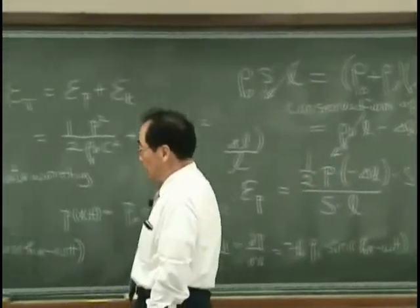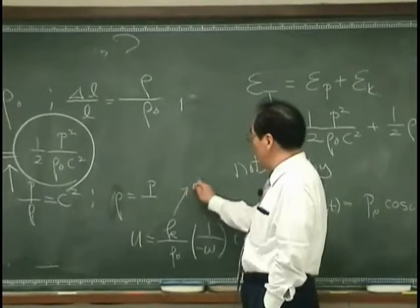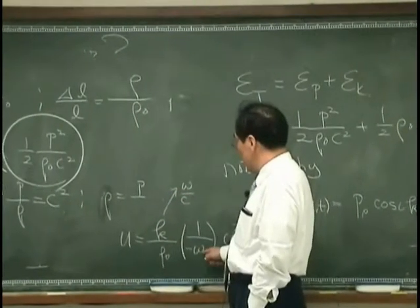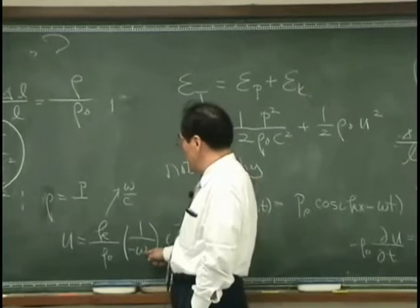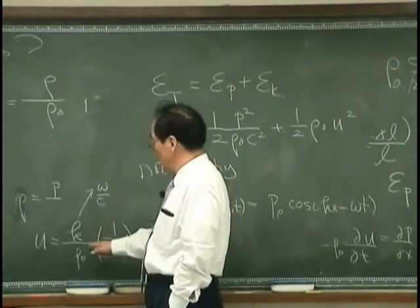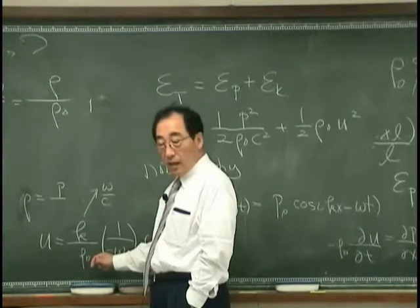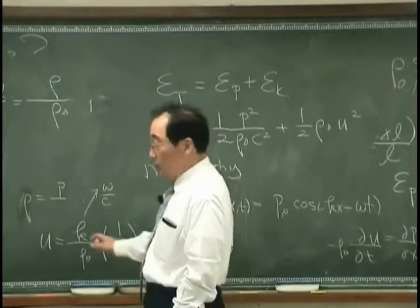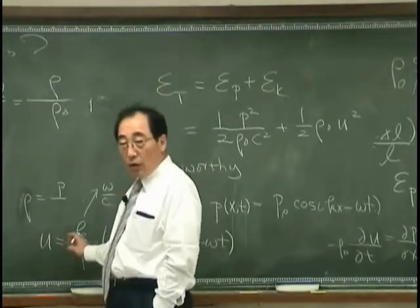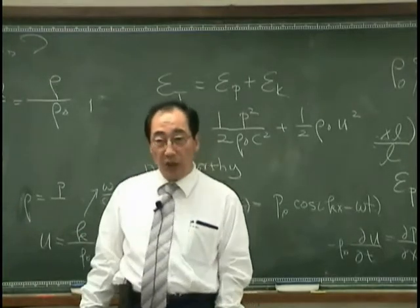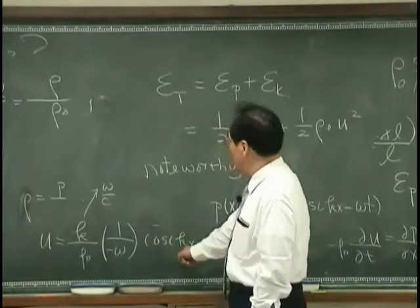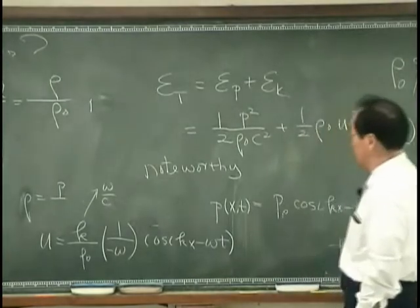That I know that K is equal to omega over C, so this is 1 over rho 0, and then if I square this, I will have 1 over rho square, C square, cosine this.